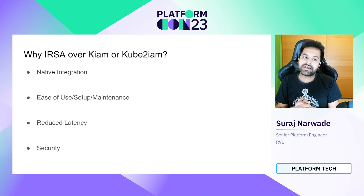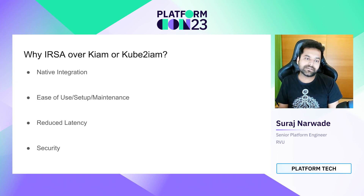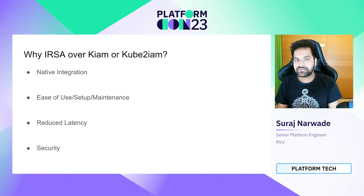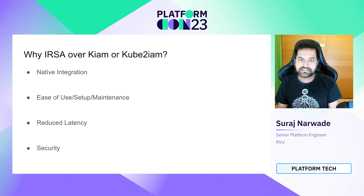One can ask: why should we use IRSA over the other open source solutions — KAYAM or kube2IM — in a non-EKS EC2-based Kubernetes cluster? The reasons are fairly straightforward. It's a native integration provided by AWS. It is very easy to set up, easy to use, and easy to maintain. It also reduces latency — with KAYAM or kube2IM there was added latency because of proxying the request and then processing — and it adds security as well.